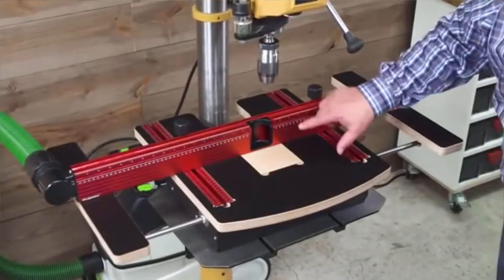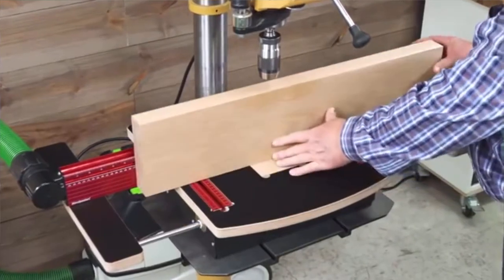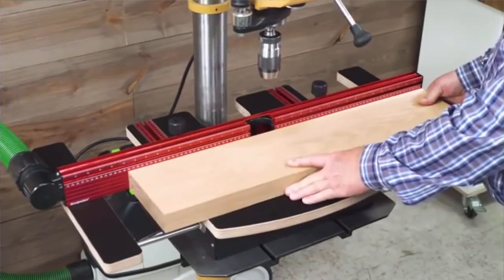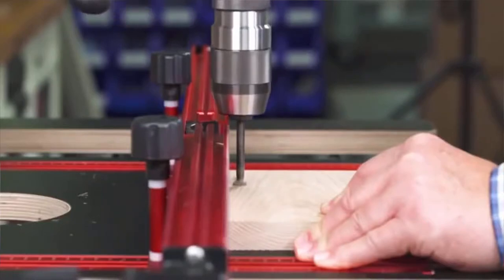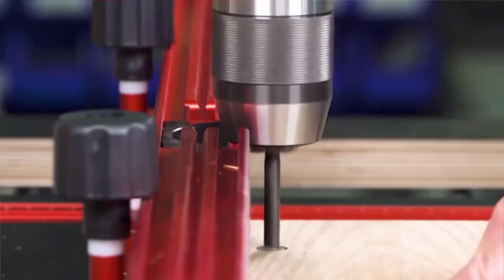The system starts with the new DP Pro fence. It's taller than previous fences, supporting work vertically as well as horizontally. The middle of the fence is cut out, so your chuck will never interfere with the fence.